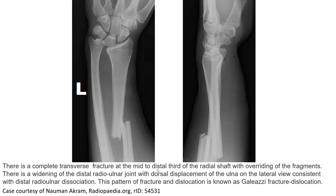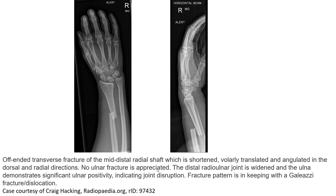Another case, also a Type 2 Galeazzi fracture, where we see the distal fragment of the radius fracture. Here we can see the distal fragment — this is the location of the radius fracture, which is dorsally displaced.